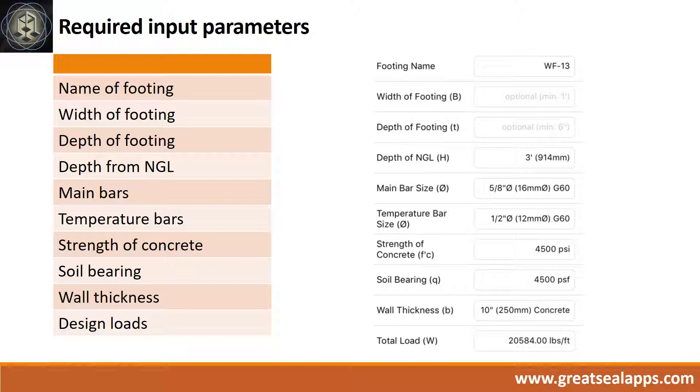Strength of concrete, 4,500 PSI. Soil bearing capacity, 4,500 PSF. Wall thickness, 10 inches concrete wall. And total load of 20,584 pounds per foot.